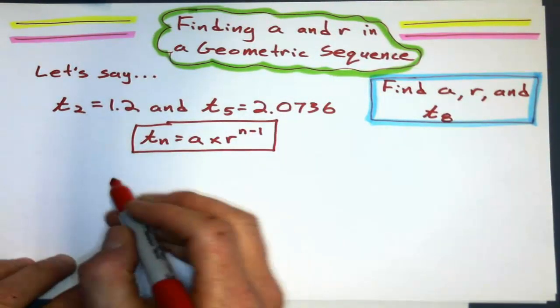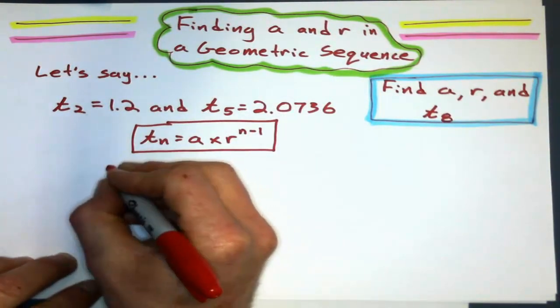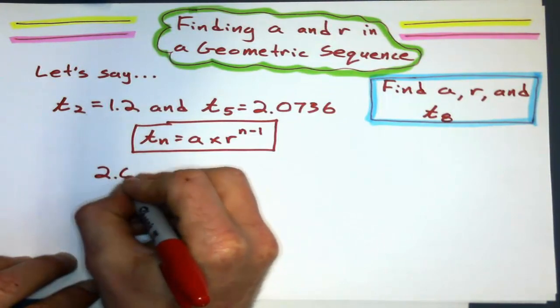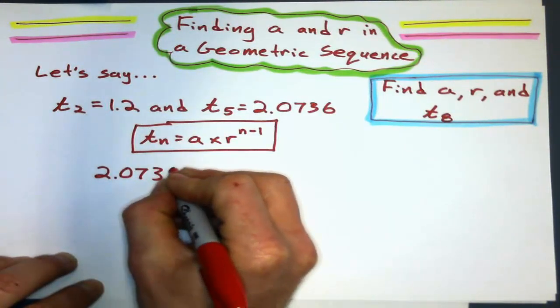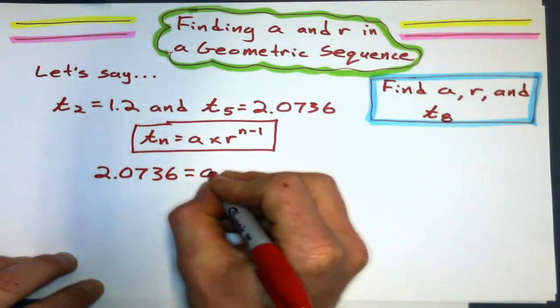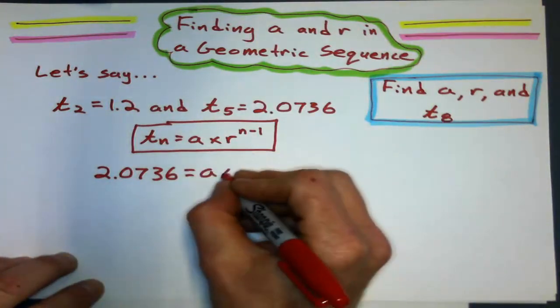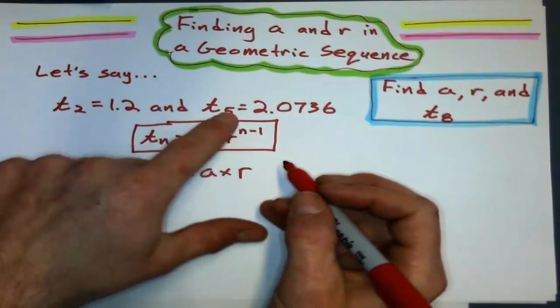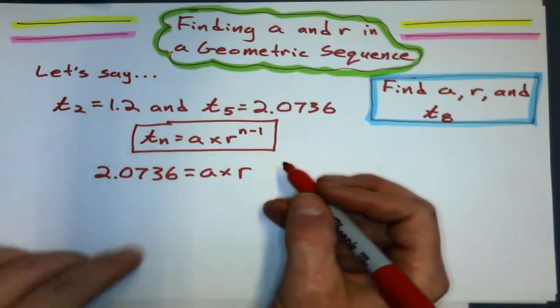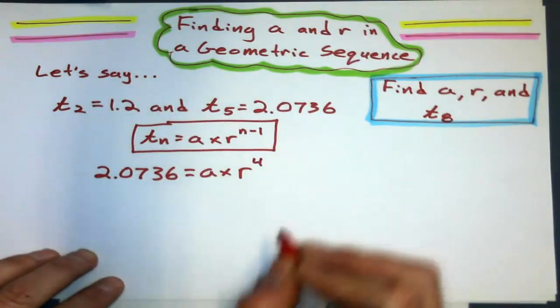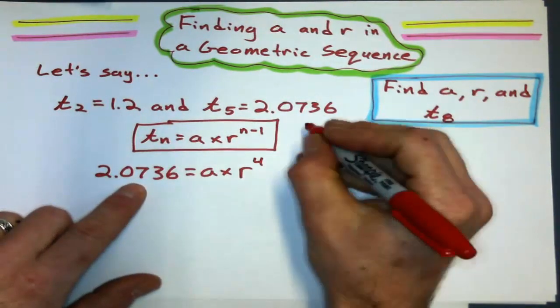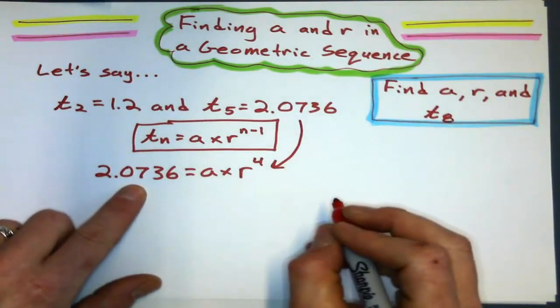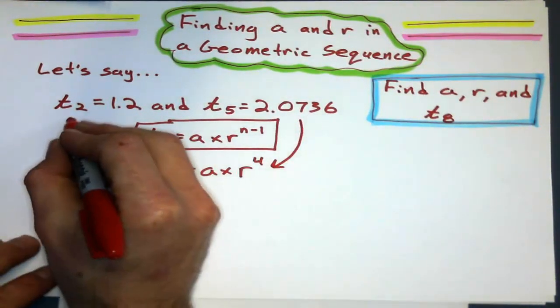Tₙ means the value of the fifth term. So Tₙ is going to be 2.0736 equals a, I don't know my first term yet, times r, I don't know the common ratio yet, but I know n minus 1, 5 minus 1 is going to be 4. So that's for this guy right there.